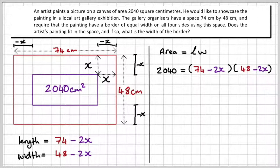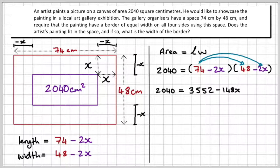So step number one, we're going to expand the brackets. 74 times 48 is 3,552. 74 times minus 2X is minus 148X. Minus 2X times 48 is minus 96X. And finally, minus 2X times minus 2X is positive 4X squared.